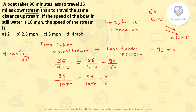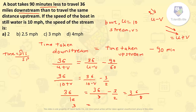Rather than solving by the normal algebraic method, use the options to save time. Trying V = 2: left side = 36/12 = 3. Right side = 36/8 − 3/2 = 4.5 − 1.5 = 3. Left side equals right side, so the answer is V = 2 mph. Rather than solving it completely, you can use the options and save time.